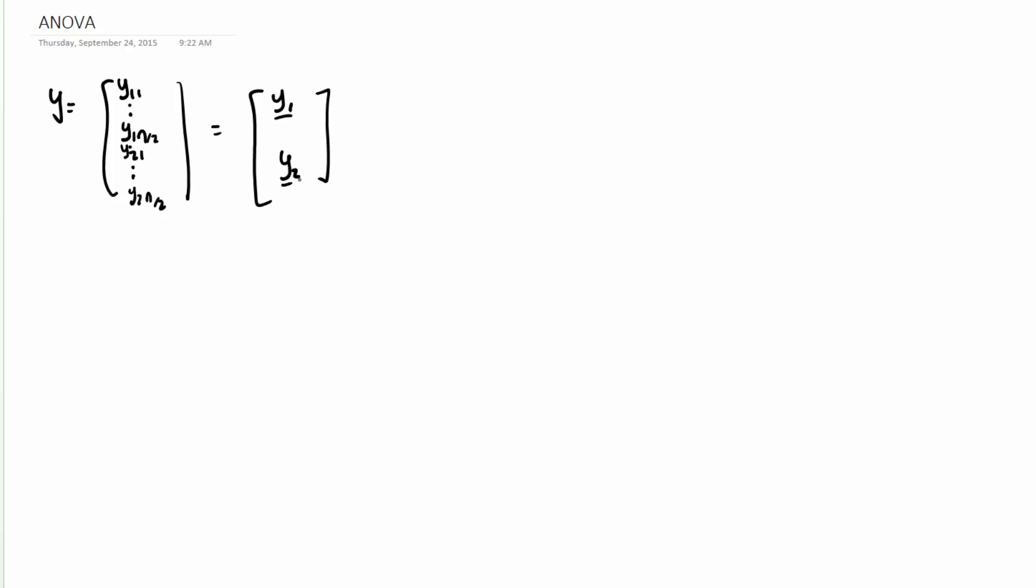where the first comes from one group and the second comes from another group. So we might think of a setting where we're plotting y and we have group 1, group 2, something like a box plot.